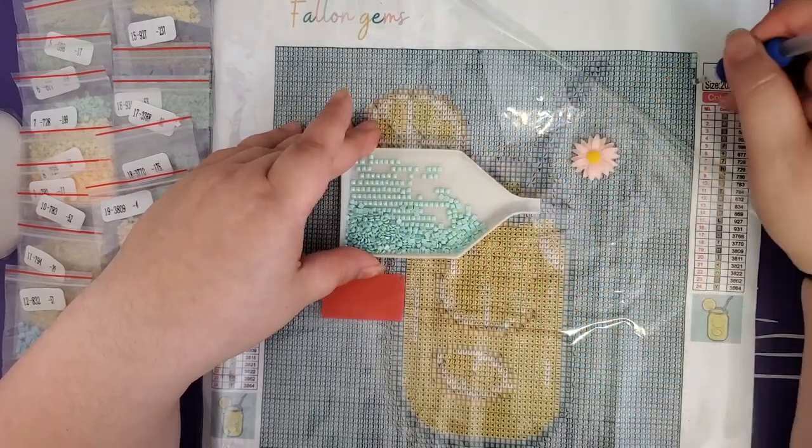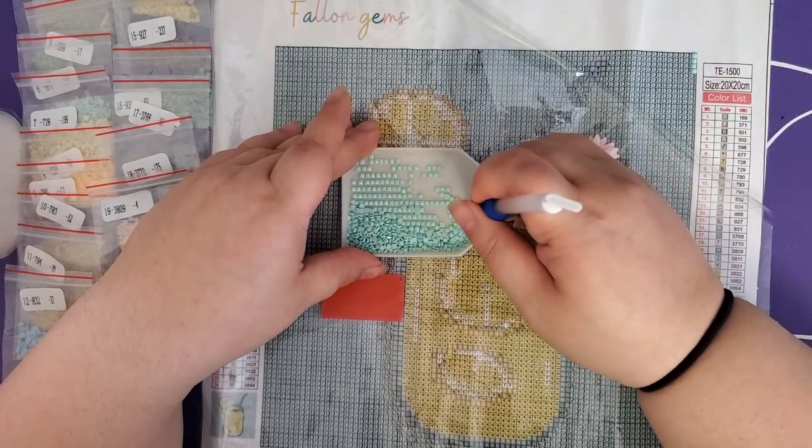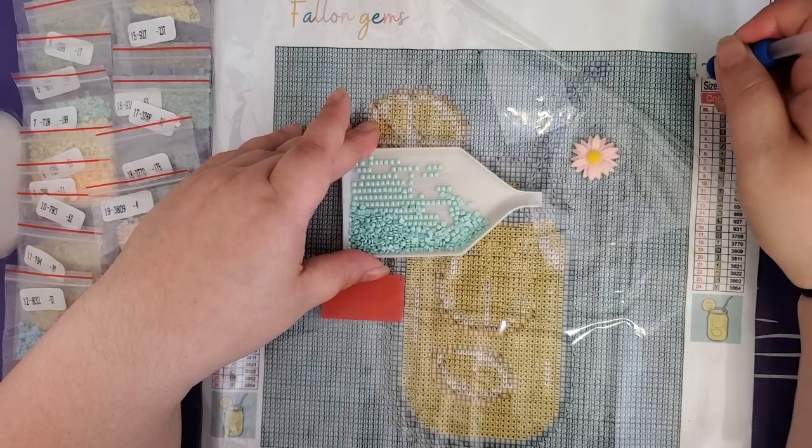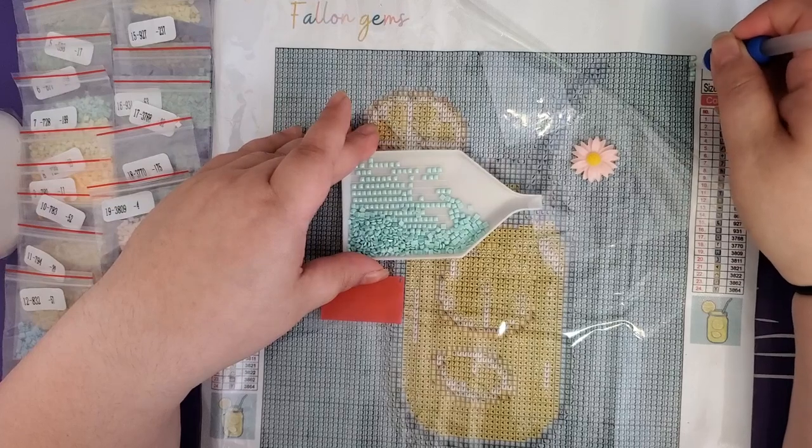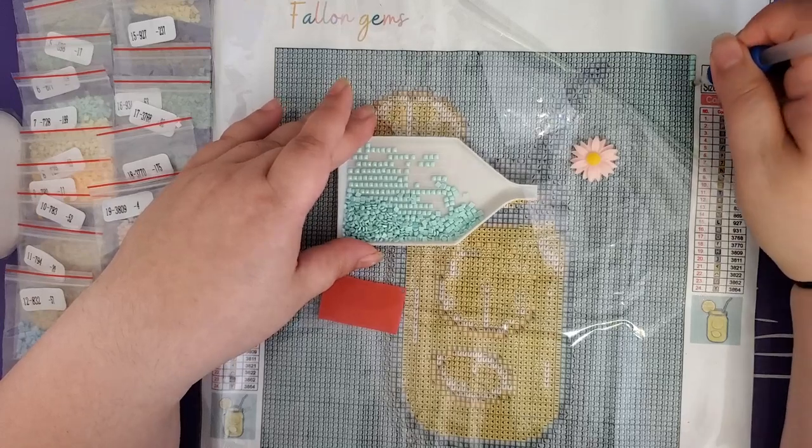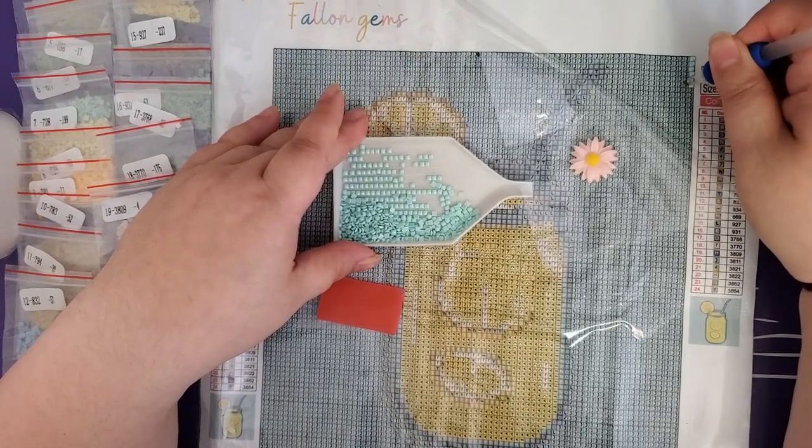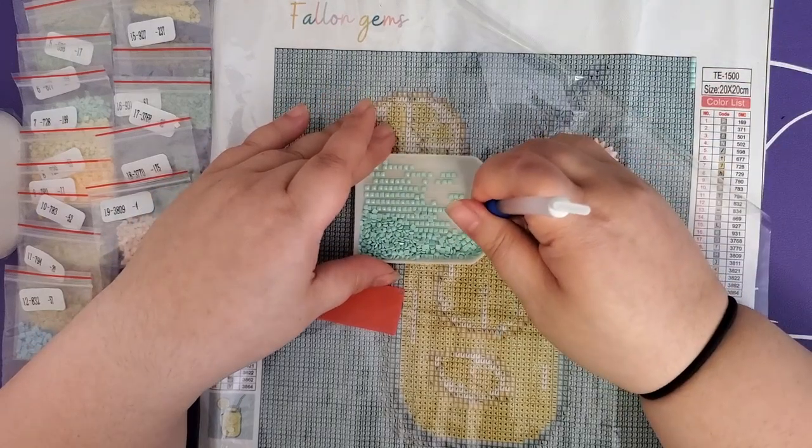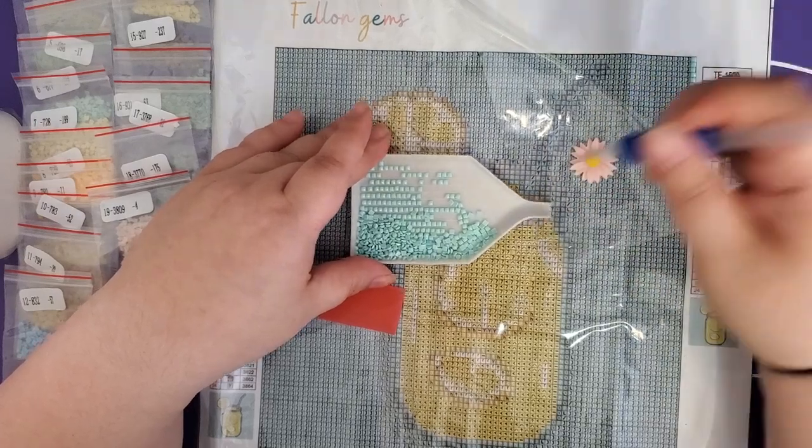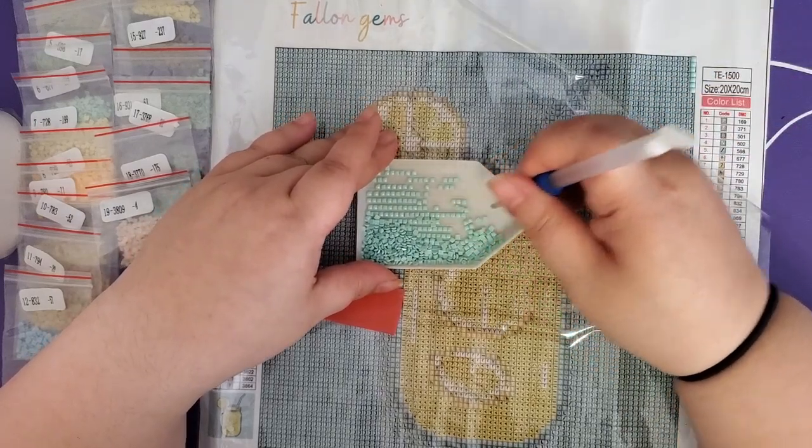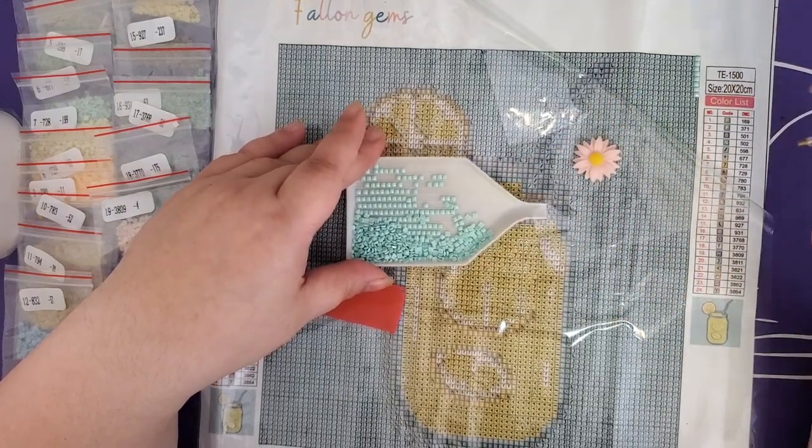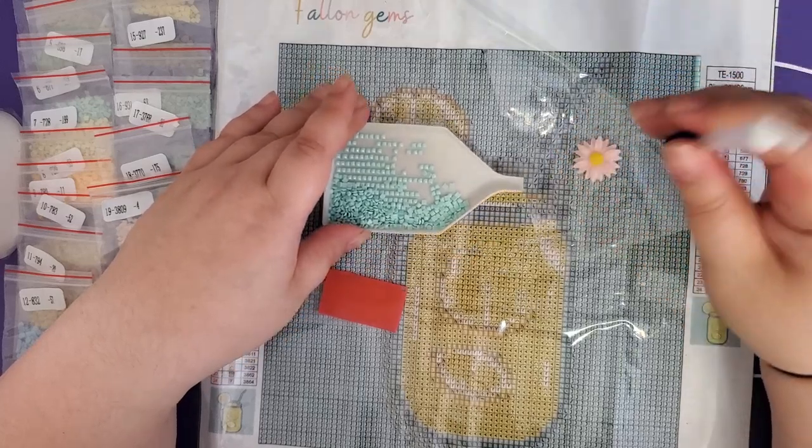Now there might be several hundred or several thousands, tons of thousands of these little drills that need to go down on a canvas, depending on how big it is and how detailed. And this can be kind of slow and time-consuming. So here's what we're going to do to fix that.